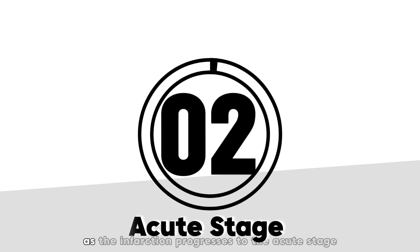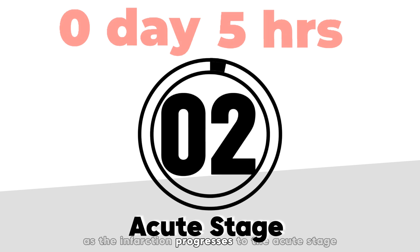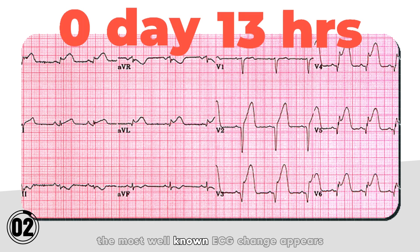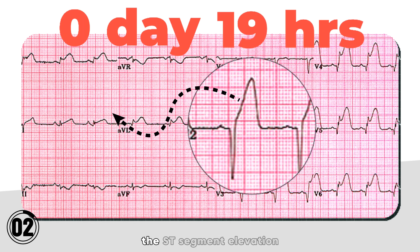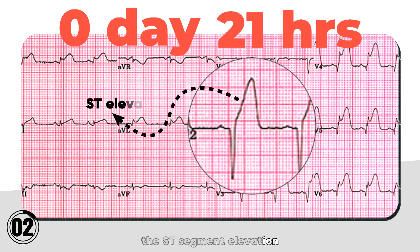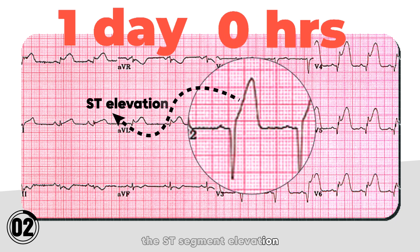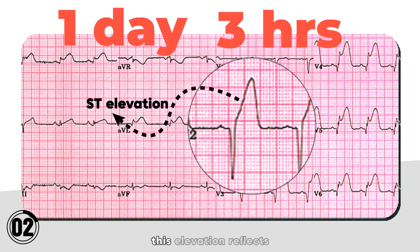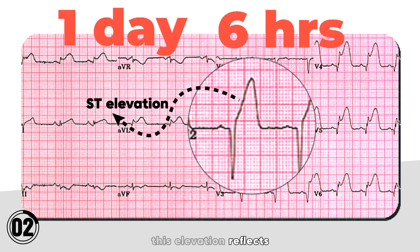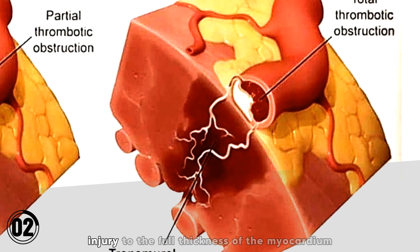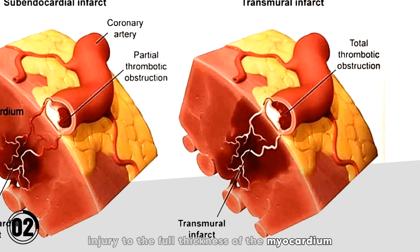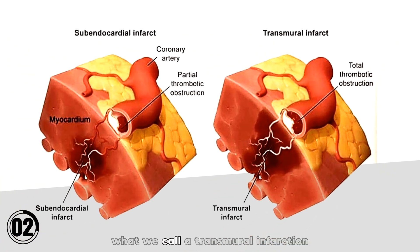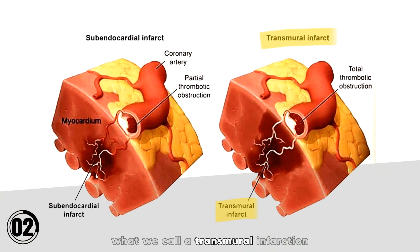As the infarction progresses to the acute stage, the most well-known ECG change appears: ST segment elevation. This elevation reflects injury to the full thickness of the myocardium — what we call a transmural infarction.